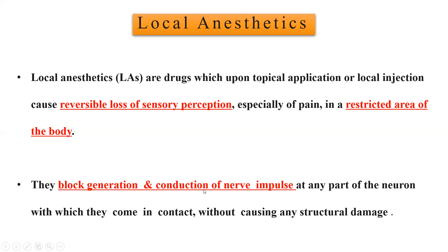They block the generation and conduction of nerve impulses at any part of the neuron with which they come in contact, without causing any structural damage. The sensation is due to nerve impulses flowing throughout the body, and local anesthetics at that local place block the generation and conduction of nerve impulses, causing loss of sensation, but without producing any structural damage.